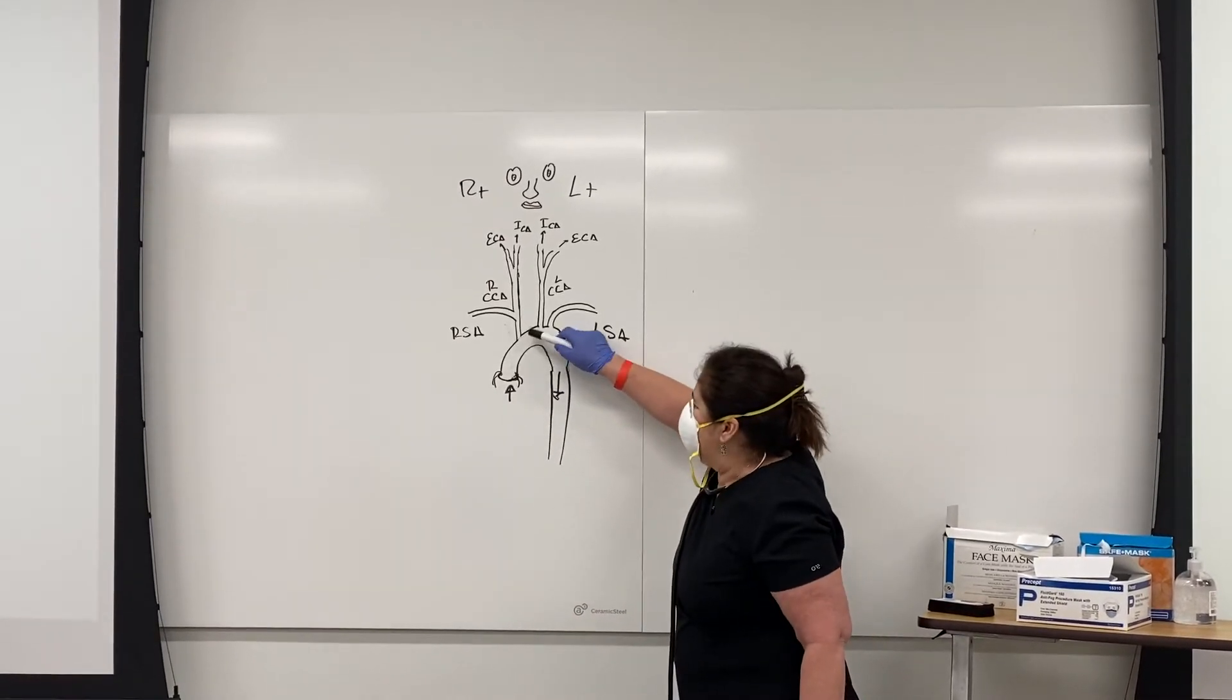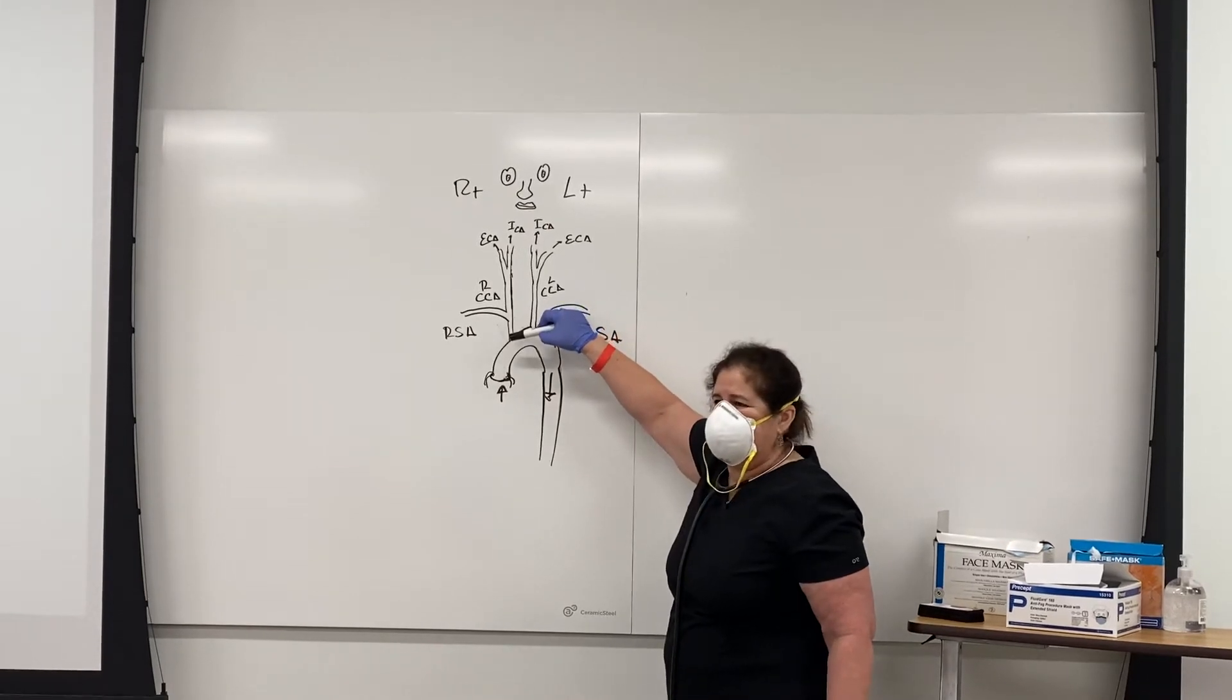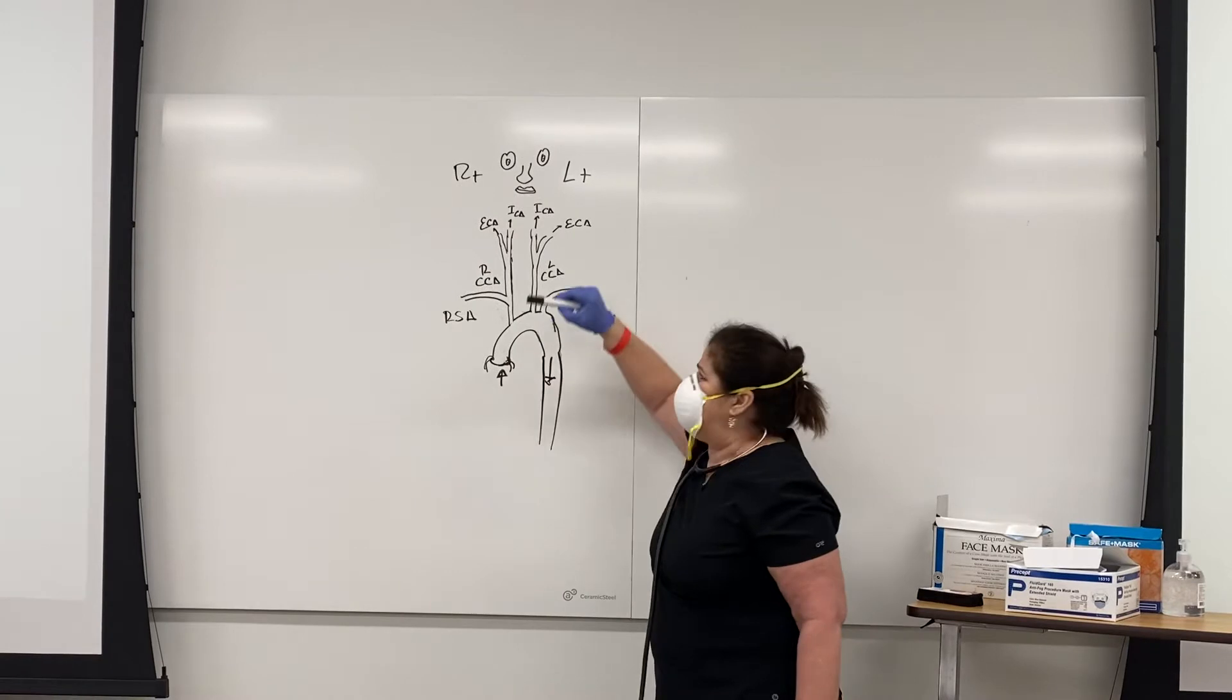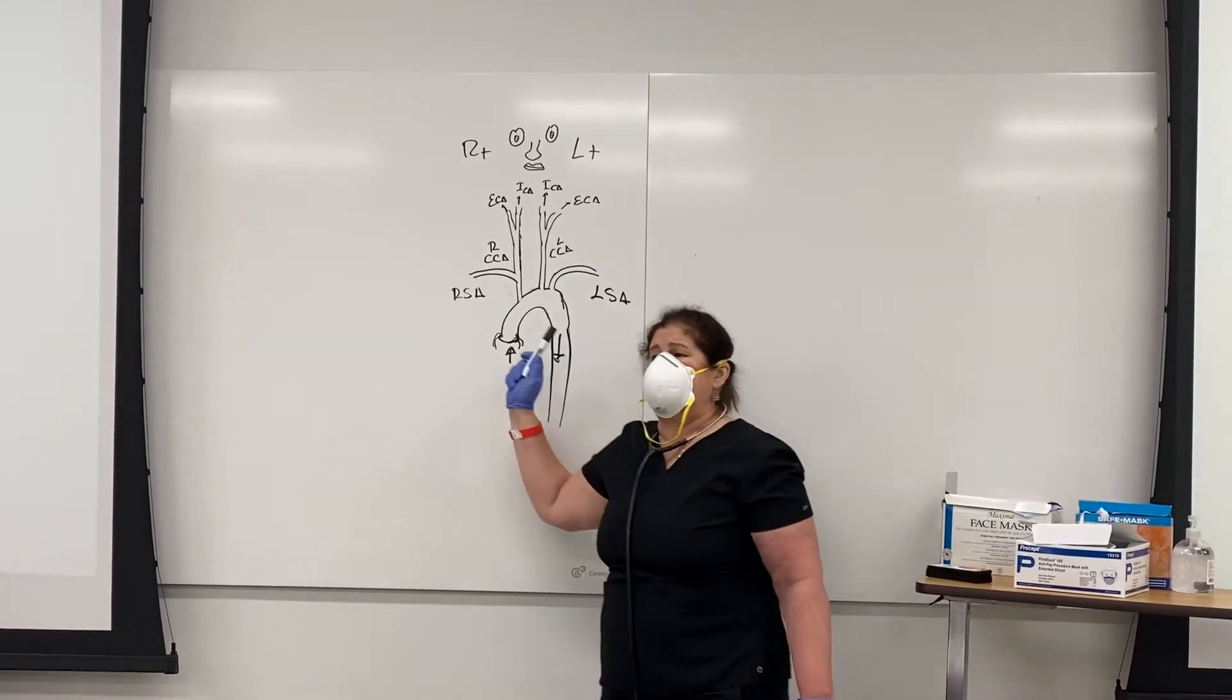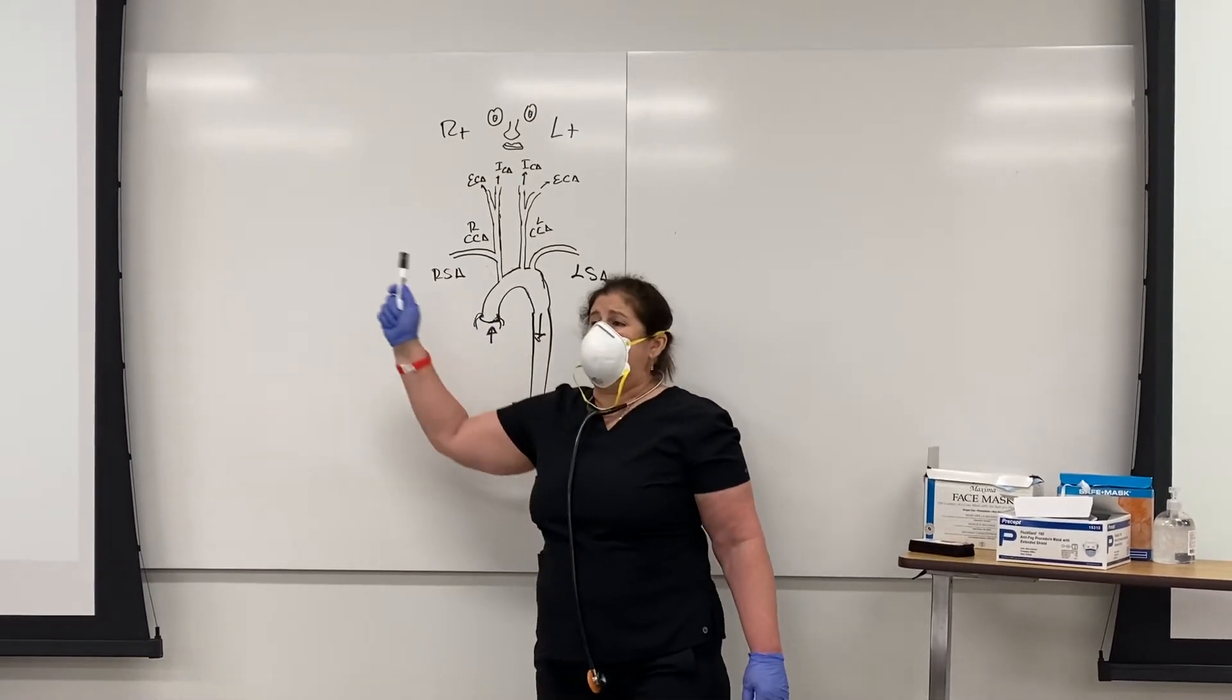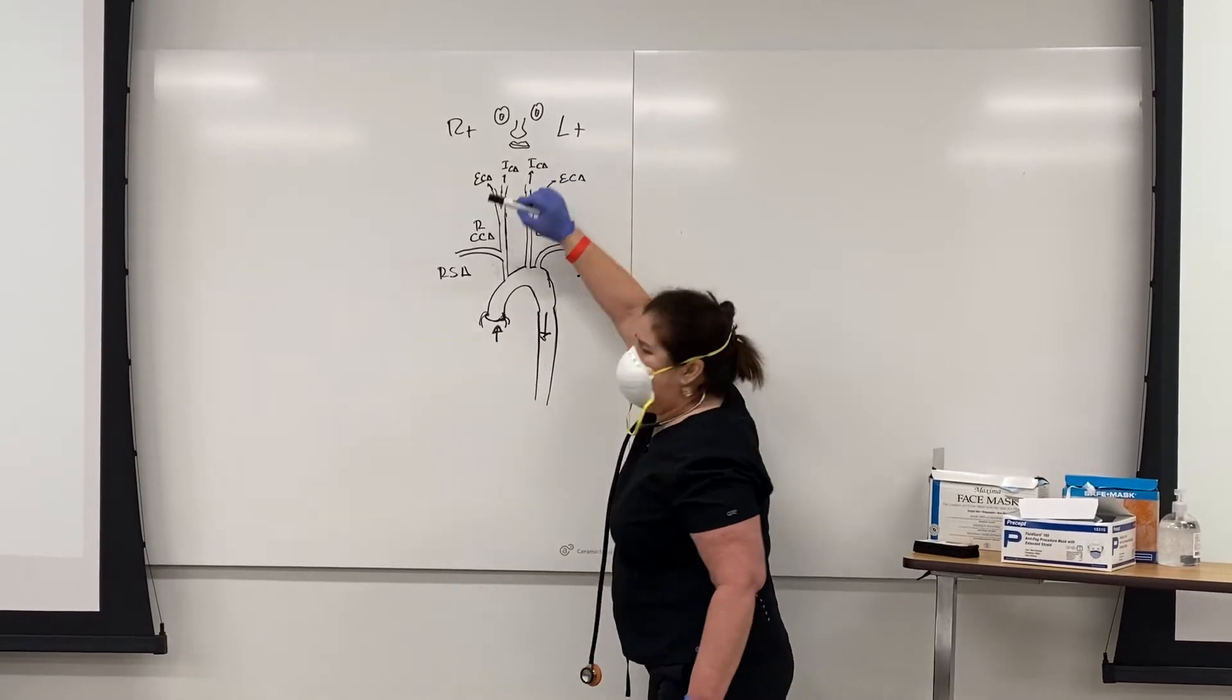Then in the aortic arch, we're going to see at the right part the brachiocephalic trunk. The brachiocephalic trunk is going to give origin to the right subclavian artery and the common carotid artery.